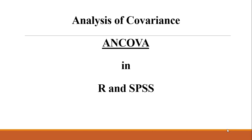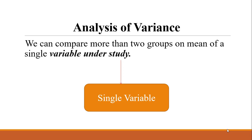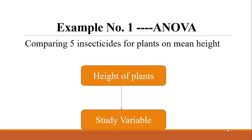Before defining the analysis of covariance, we must discuss the analysis of variance in order to make a connection between these two techniques. In analysis of variance, we can compare more than two groups or populations on the mean of a single variable under study. For example, comparing five insecticides for plants on mean height — here, the height of plants is the study variable.